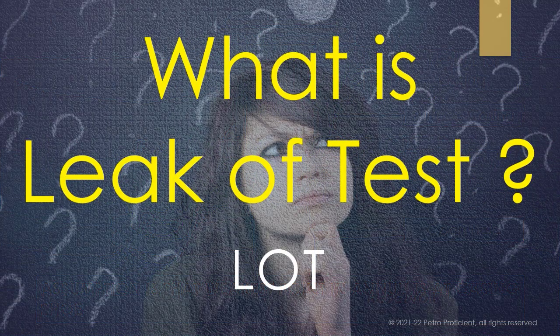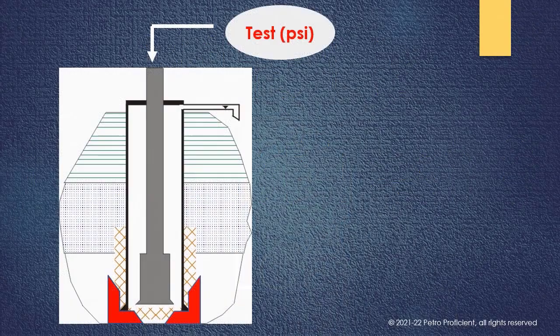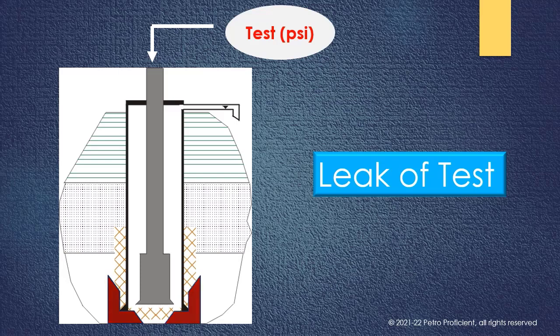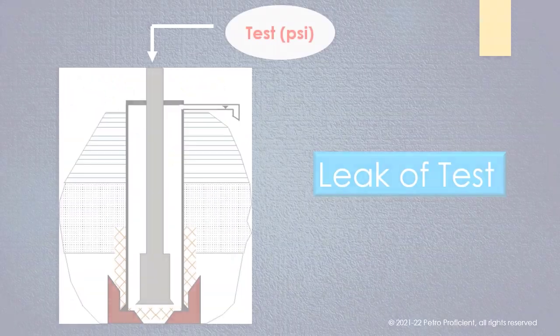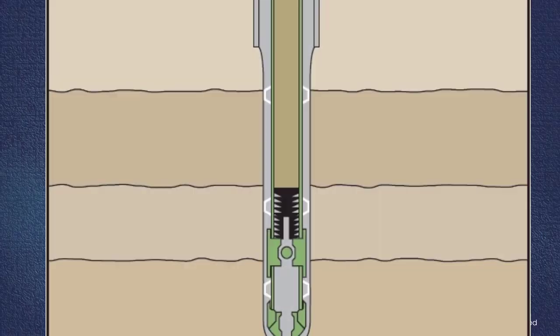What is a leak-off test? Leak-off test involves pressure testing the formation exposed below the casing shoe. The test is carried out to a specified equivalent mud weight, or until the formation fractures and a leak-off of drilling fluid occurs. This is also called the leak-off value. The results of the leak-off test limit mud weights to be used in the subsequent hole section, and is also used to determine the casing setting depth for the well. Leak-off test also indicates the quality of the cement job.